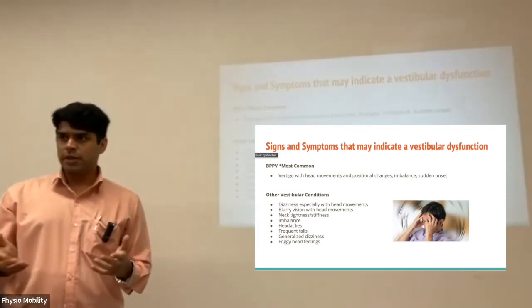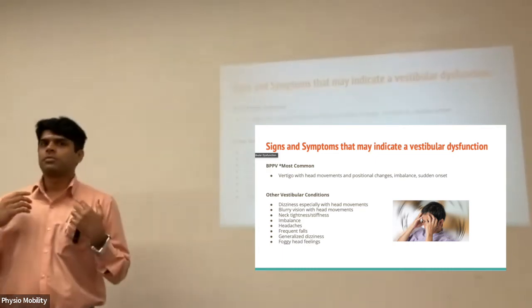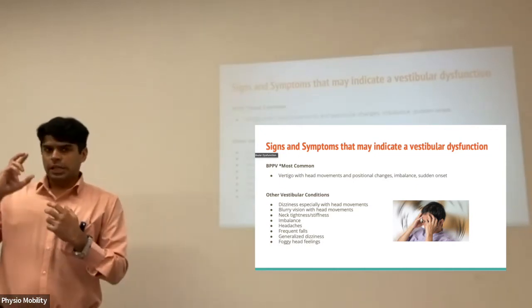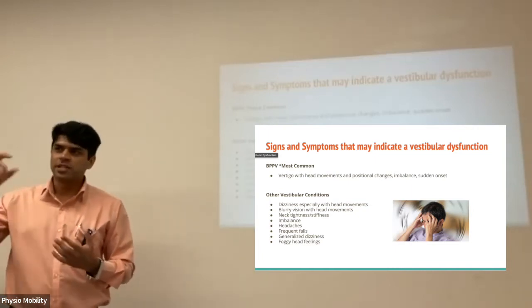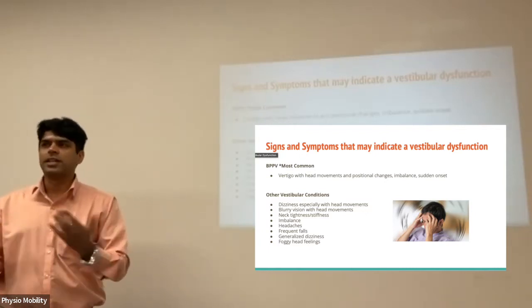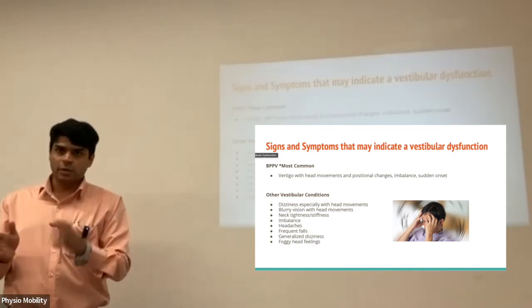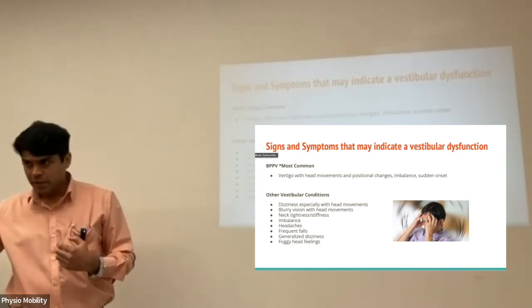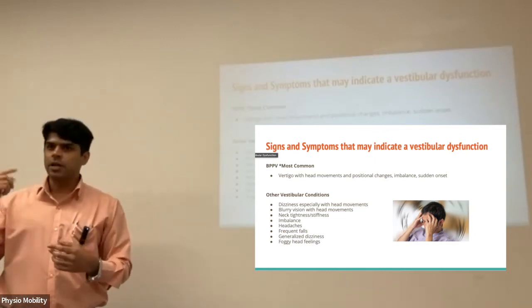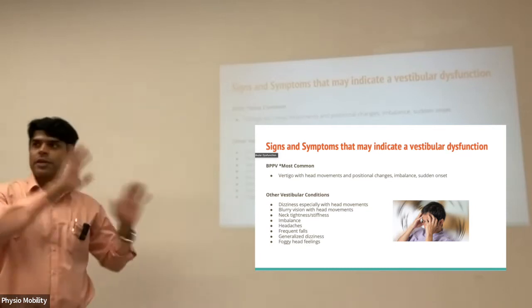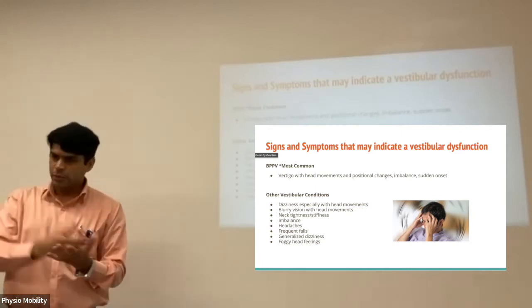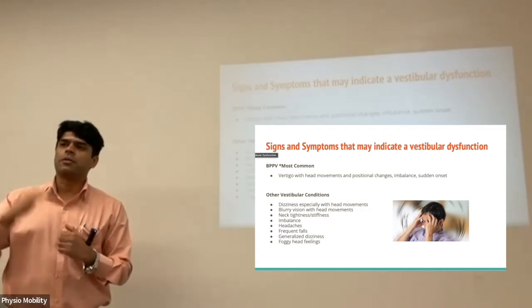The most common sign of vestibular dysfunction is vertigo. When we say vertigo, the key word in the history taking that we do is 'spin.' If you have spinning, you have vertigo. Vertigo and dizziness in layman's terms are used interchangeably, but when we're getting technical in our assessments, if you do not have the spin, you do not have vertigo — you have dizziness. When I say spin, I mean: my head is spinning, the room is spinning around me, the pictures on the wall feel like they're hazy and moving around. That is vertigo, and it is the most common sign of vestibular dysfunction.